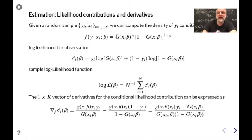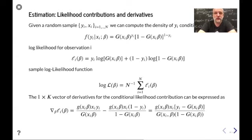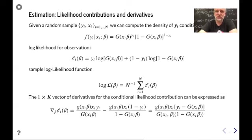We substitute that in to get our model for the conditional density of y given x evaluated at the data. We can compute the density of y_i conditional on x_i, and we want to maximize that — because we want to maximize the probability that we observed y given that we observed x. That's maximum likelihood. We do that for all observations, then take the log because it makes it more well-behaved, and we get the log likelihood contributions.